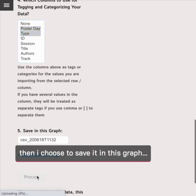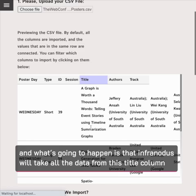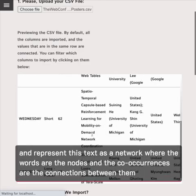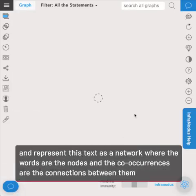Then I choose to save it in this graph. And what's going to happen is that Infranodus will take all the data from this title column, the text, and represent this text as a network where the words are the nodes and the co-occurrences are the connections between them.